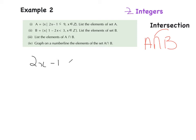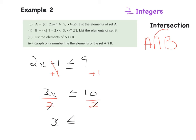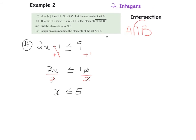Solving A: 2x - 1 ≤ 9. Add 1 to both sides: 2x ≤ 10. Divide by 2: x ≤ 5. So the answer to A is x ≤ 5. Listing the elements of A — anything less than or equal to 5: 5, 4, 3, 2, 1, 0, and so on continuing downward.